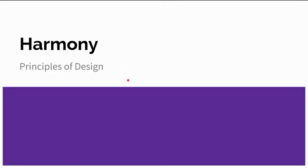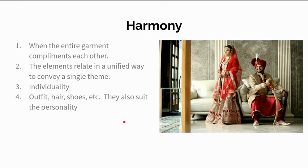The last thing we're going to talk about is harmony. Harmony is basically when the entire outfit makes sense — you can use it through color, textures, or anything like that. The entire garment complements each other; all the elements relate in a unified way and convey a single theme. Think of weddings: the bride in a white or light-colored gown, the groom in a tux, and the bridesmaids using the same textures, colors, or coordinating colors to match the wedding theme. It also helps promote individuality and can be achieved through the outfit, hair, shoes — a combination of all of those — and tends to suit the personality of the person wearing it.